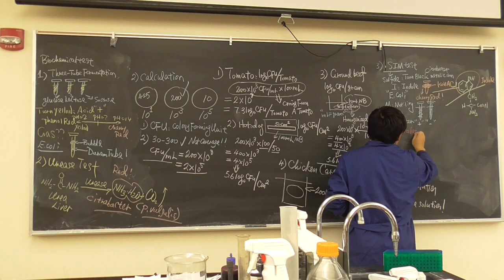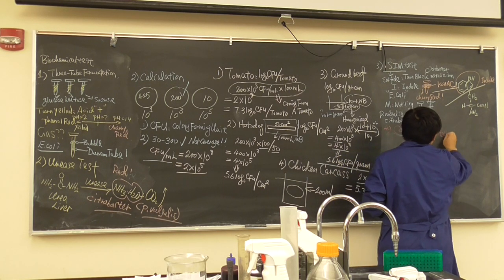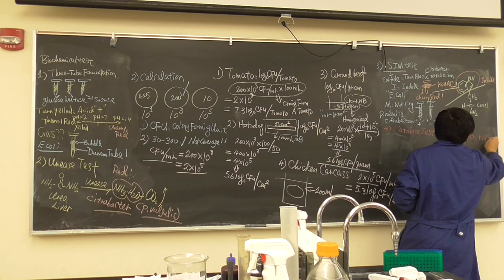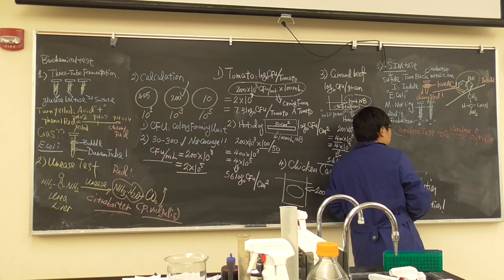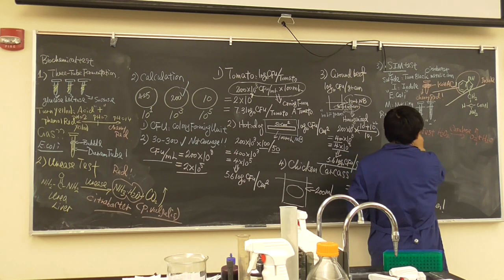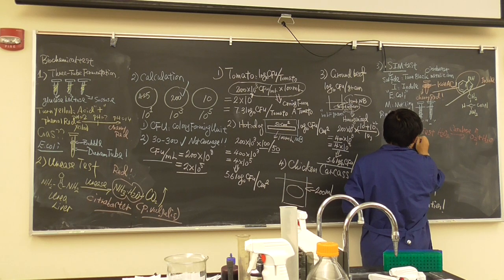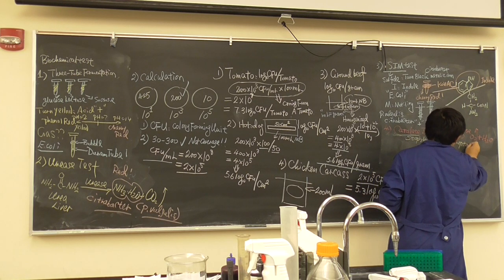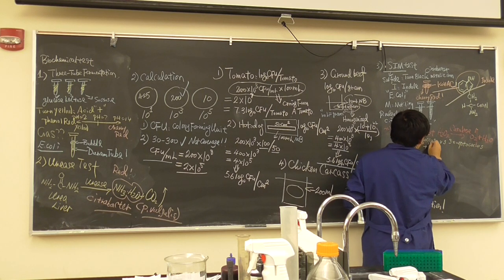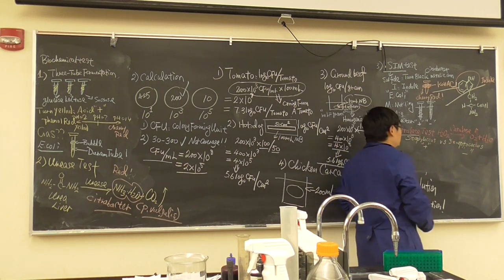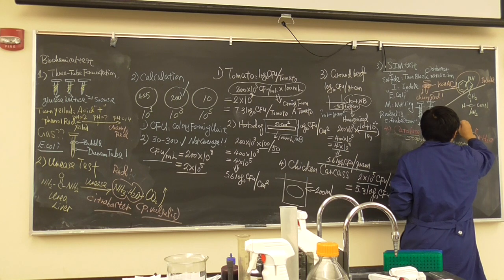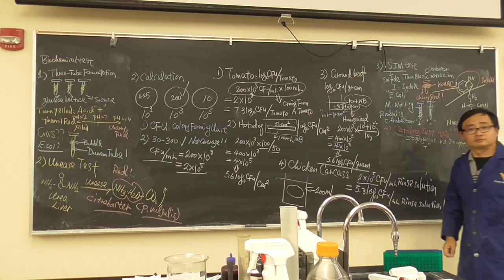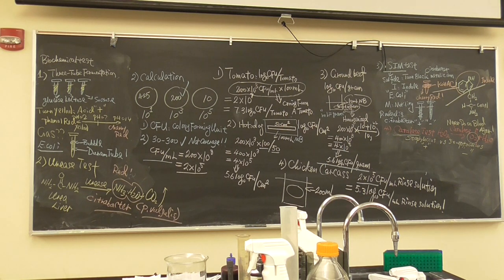Fourth is the catalase test. H₂O₂ with catalase breaks down into oxygen and water, producing bubbles. Staphylococcus is catalase positive; Streptococcus is catalase negative. Important note: you cannot perform the catalase test on blood agar, because the red blood cells in the agar will give a false positive bubble reaction.